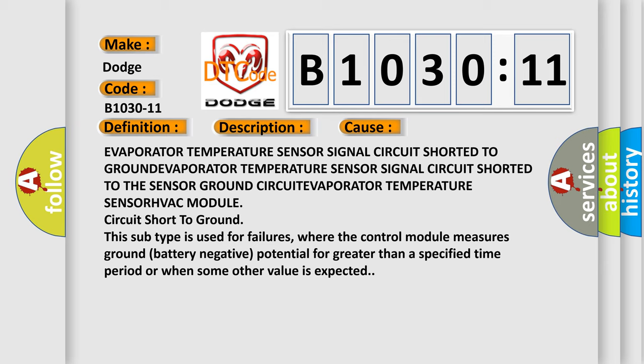This subtype is used for failures where the control module measures ground battery negative potential for greater than a specified time period or when some other value is expected.